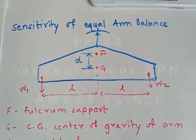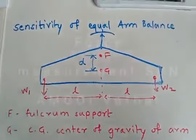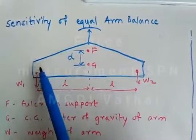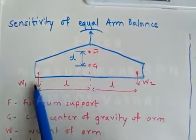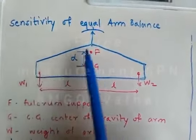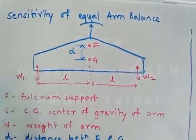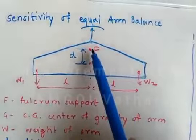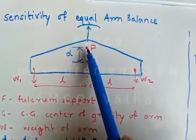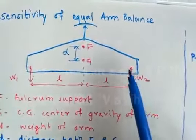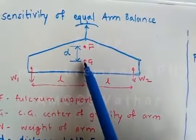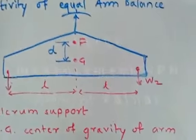Now let us discuss the sensitivity of the equal arm balance. In the picture, you can see the schematic of the arm which is used in equal arm balance. The point F indicates the fulcrum or the point about which the arm rotates. Point G is the center of gravity of the arm.